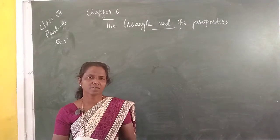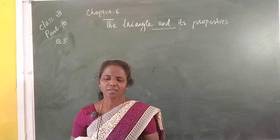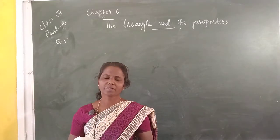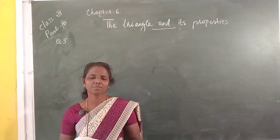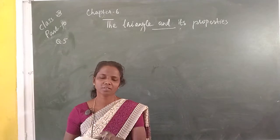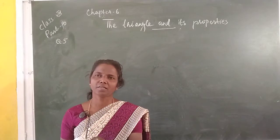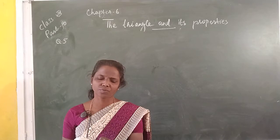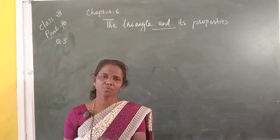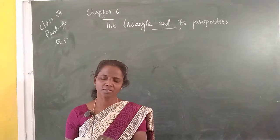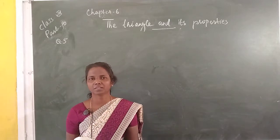Question number 5. A tree is broken at a height of 5 meters from the ground and its top touches the ground at a distance of 12 meters from the base of the tree. Find the original height of the tree.